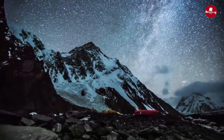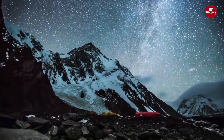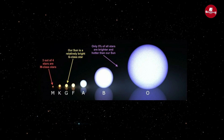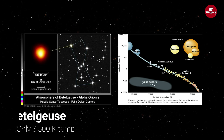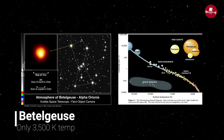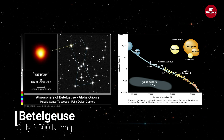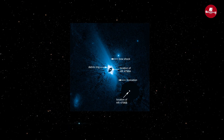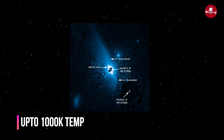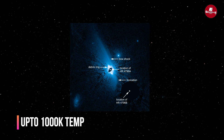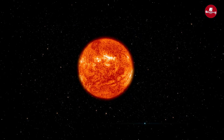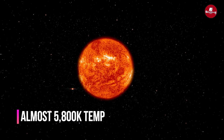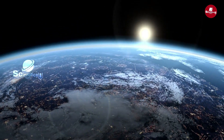The temperature determines color. The cool stars are only around 3500 Kelvin — that is why they appear red. The hotter stars appear blue. The sun is almost 5800 Kelvin — that is why it appears white.